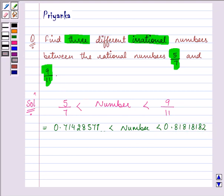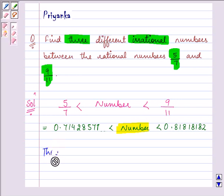So that means the required number should be between these two numbers and there can be a lot many numbers. So three numbers which we are giving to you are: